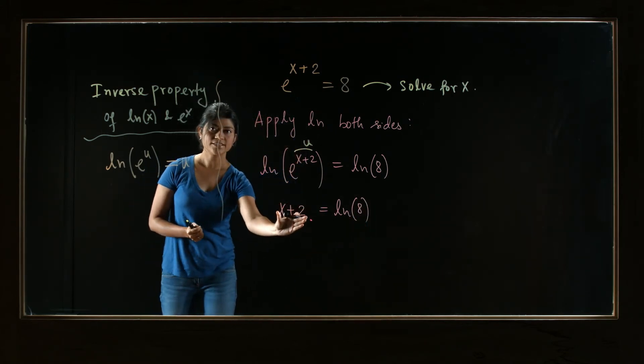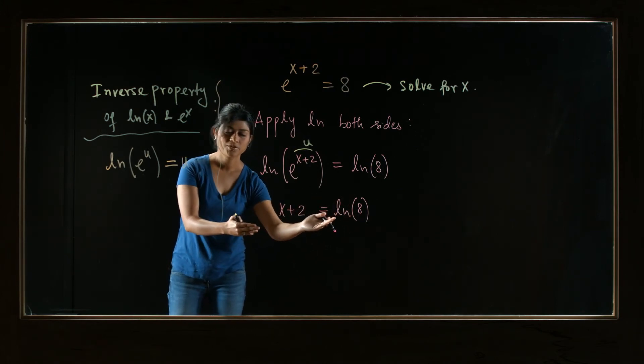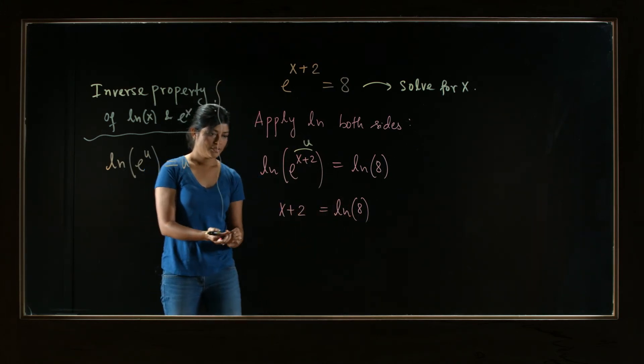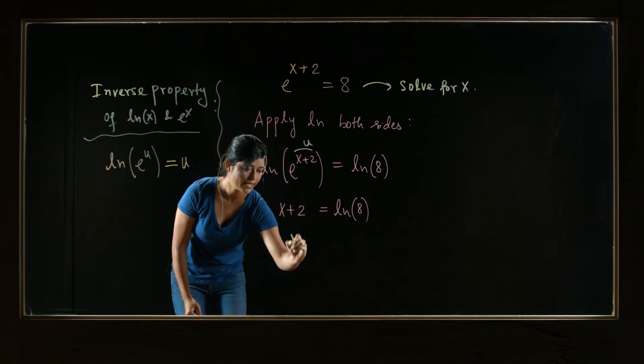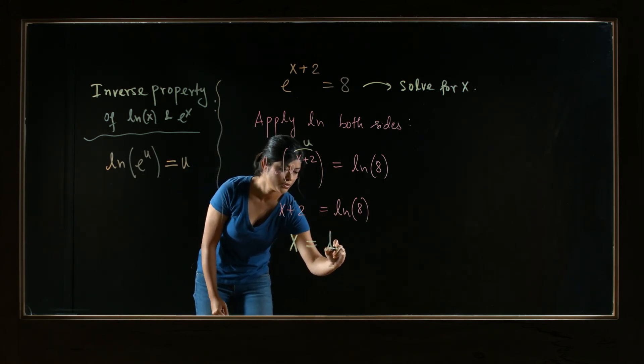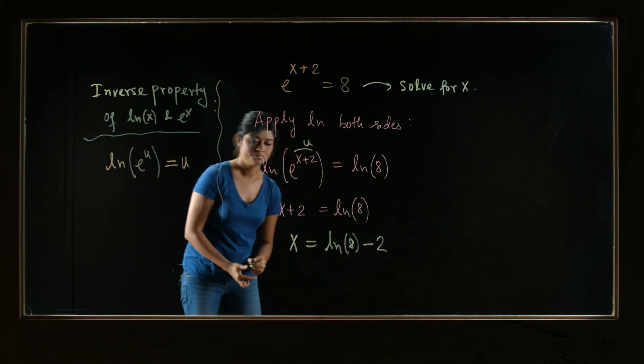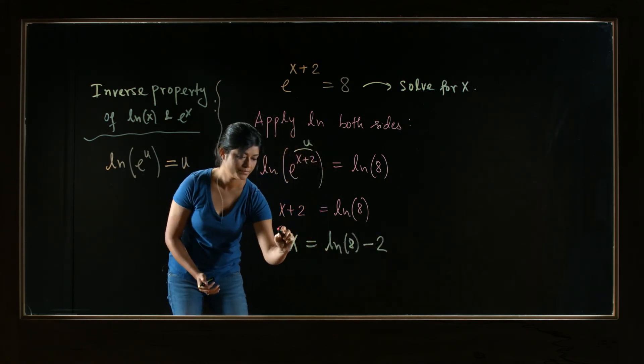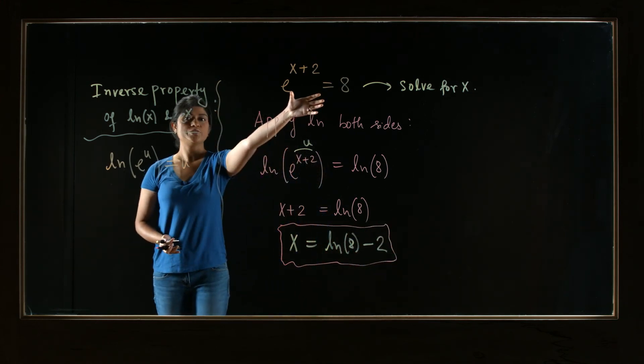Now notice that the variable x is not in the exponent anymore. It is in a linear form, and so we can solve. Just subtract 2 from both sides, and we get x is equal to ln of 8 minus 2. That is the solution to the given equation. Thank you.